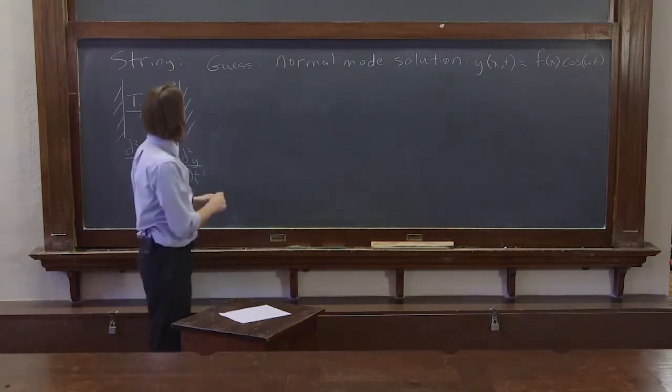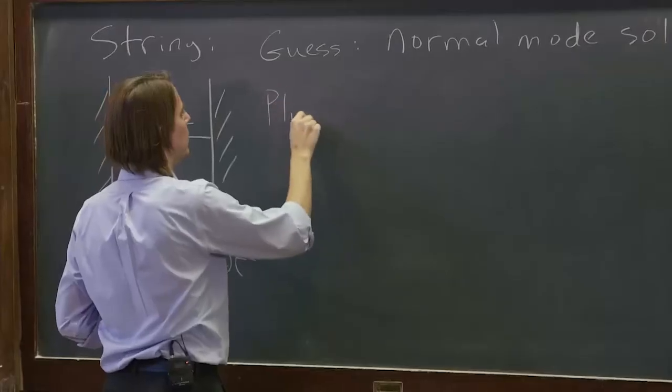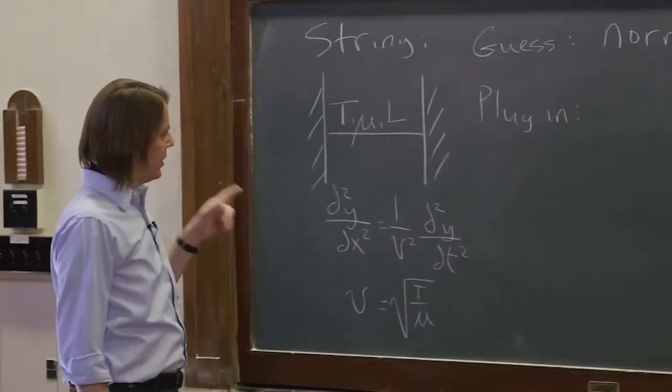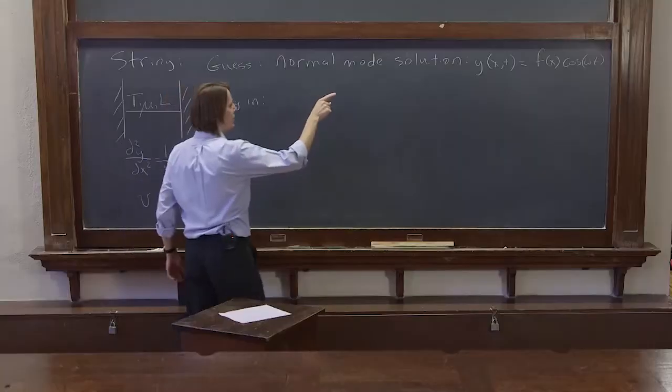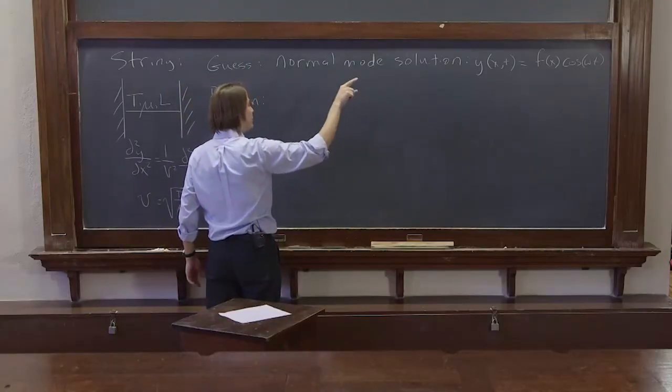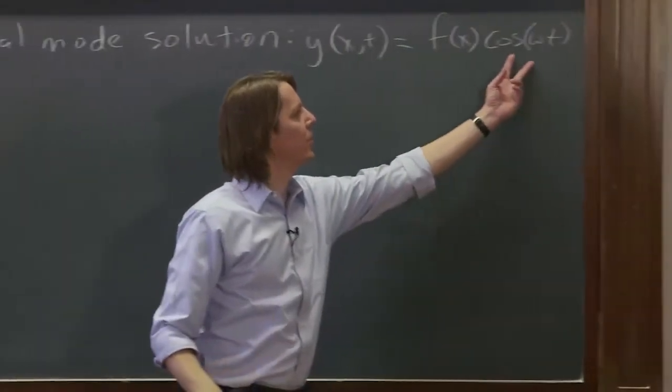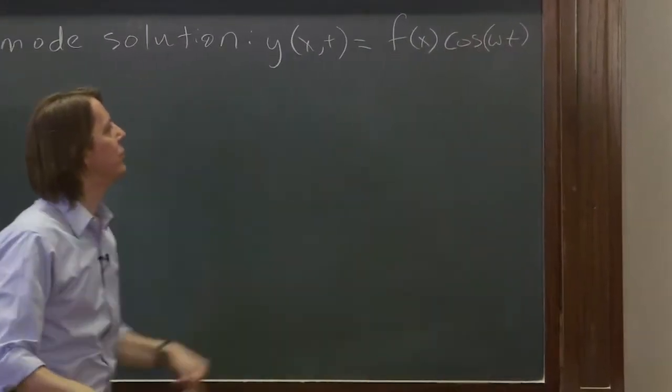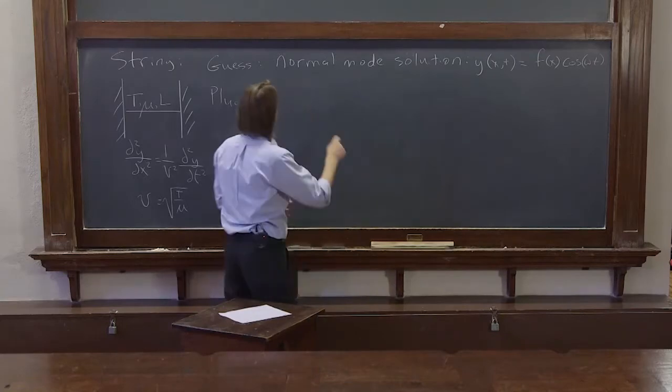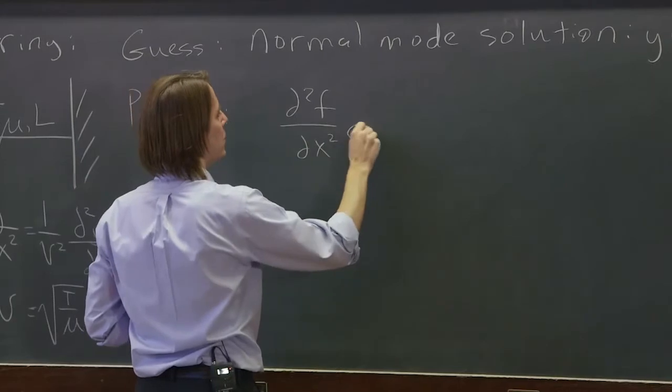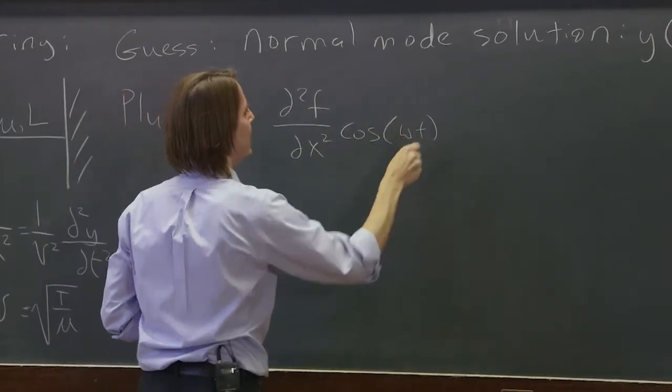And what do you do after you guess? You plug in. So we're going to plug that guess into the wave equation. So if we take two derivatives of that, two partials of that with respect to space, then we know how to take partials. You hold this part constant. It's just a constant. You take two derivatives of f of x. Well, that's just d2f/dx2 cosine omega t.